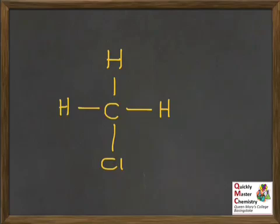By now, you should be able to look at a molecule like the one drawn here and decide if there are any polar bonds present. Why don't you pause the video at this point and mark on the partial charges. Hopefully, you decided there was a delta plus on the carbon and a delta minus on the chlorine.